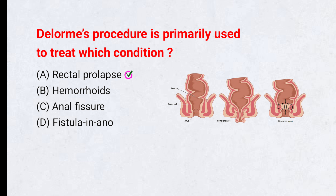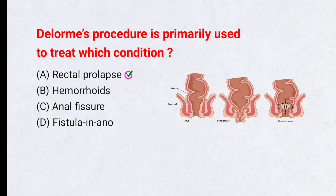Rectal prolapse. Delormis procedure is a surgery done for mucosal rectal prolapse, where only the inner lining of the rectum protrudes. The surgeon removes the redundant mucosa and tightens the muscle layer, helping restore support without major abdominal surgery.